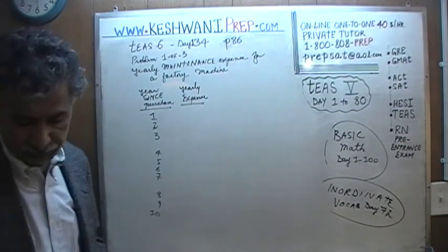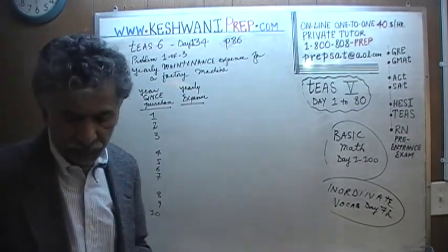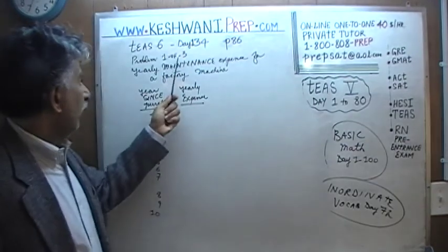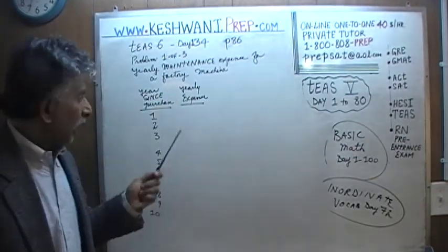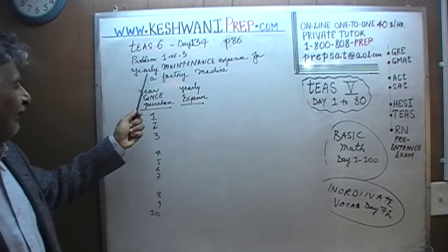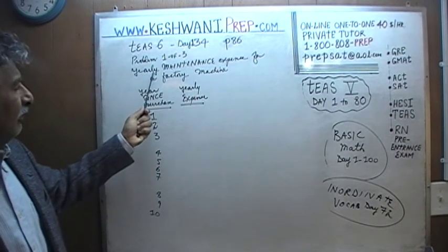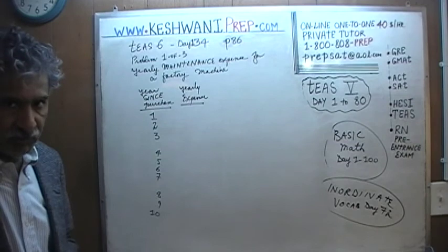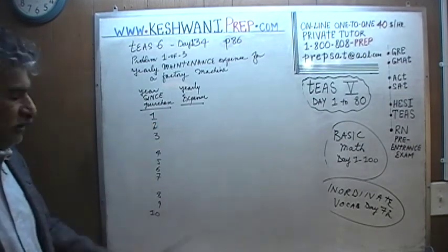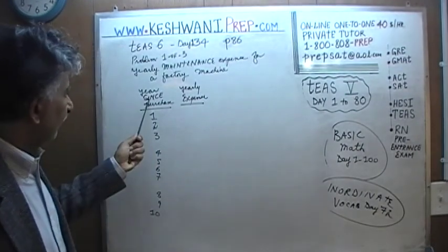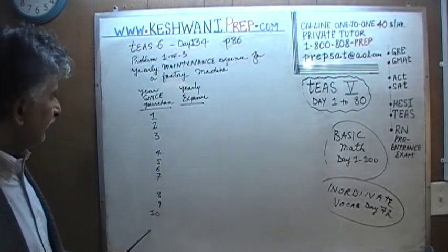We are on page number 86. On page 86 you will find three problems. We will do the first problem here, problem 1 of 3. I have reproduced part of the problem already on the black paper to save some time. It says that we have yearly maintenance expense for a factory machine. This table will show us the yearly maintenance expense, and the first column shows us the year since the machine was purchased.